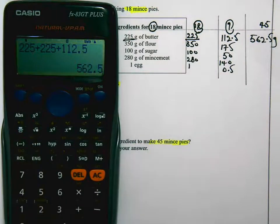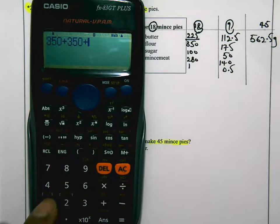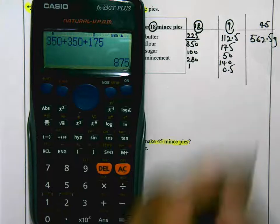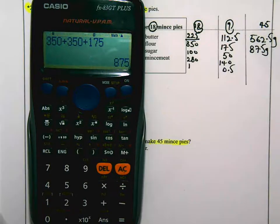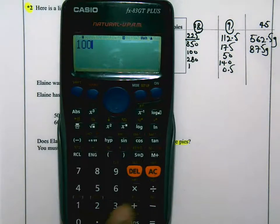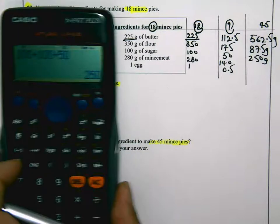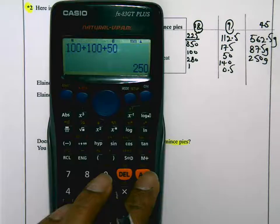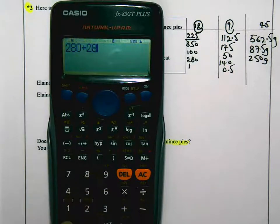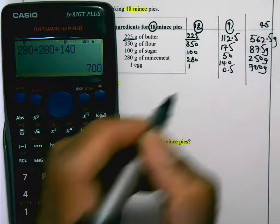For flour, it's going to be 350 plus 350 plus 175 equals 875 grams of flour. For sugar, we have 100 plus 100 plus 50 equals 250 grams of sugar. And for mincemeat, 280 plus 280 plus 140 equals 700 grams of mincemeat. And looking at the eggs, 1, 1, and 0.5, that's 2.5 eggs.